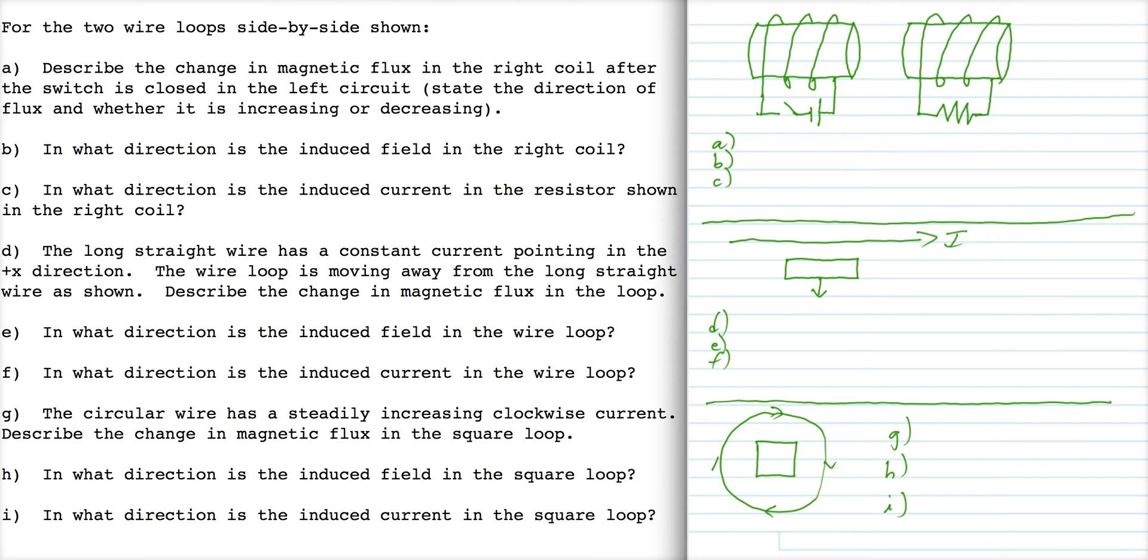We've got three different induction situations. Let's start with this first one. We close this switch to complete the circuit, and when we do that, current begins to flow up this wire, goes behind the coil, then down the front, up in the back, down in the front.